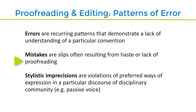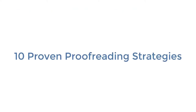You should also be aware of stylistic errors. These may not be incorrect in terms of grammar, but are things that go against the stylistic conventions of a particular discipline or form of writing. The next two slides give ten proofreading strategies that can help you spot all three of these kinds of errors or mistakes.